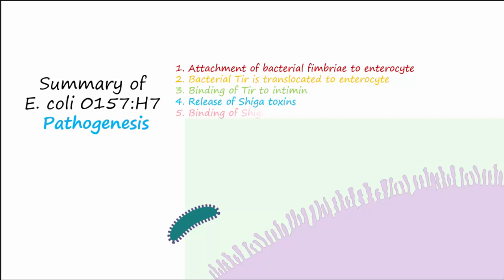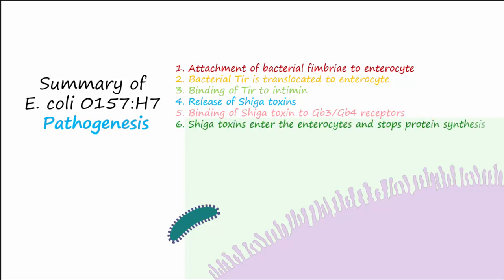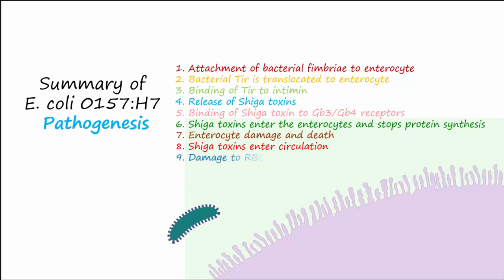Step 4: release of shigatoxins. Step 5: binding of shigatoxin to GB3 and GB4 receptors. Step 6: shigatoxins enter the cell and stop protein synthesis. Step 7: enterocyte damage and possibly death. Step 8: shigatoxins enter circulation. Step 9: damage to RBCs, platelets, kidney, and brain, and possible death.